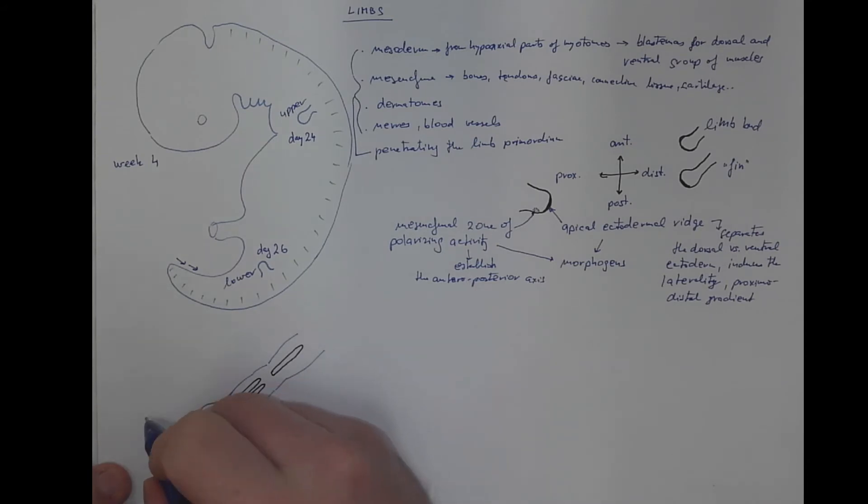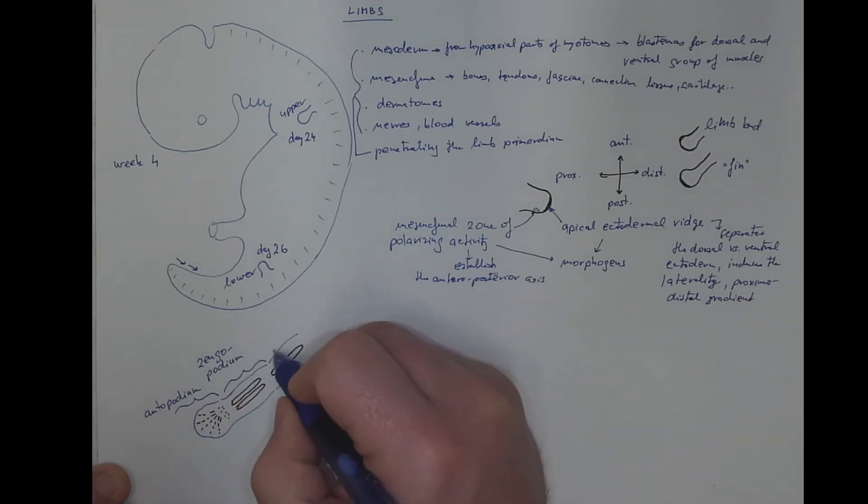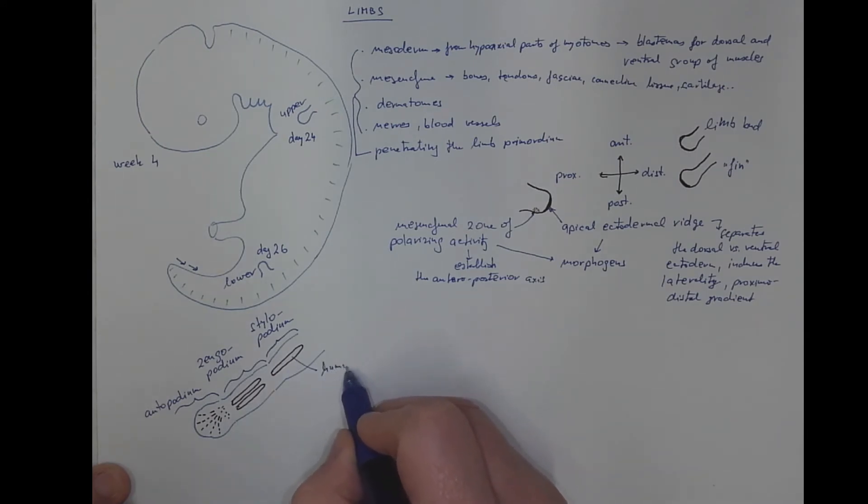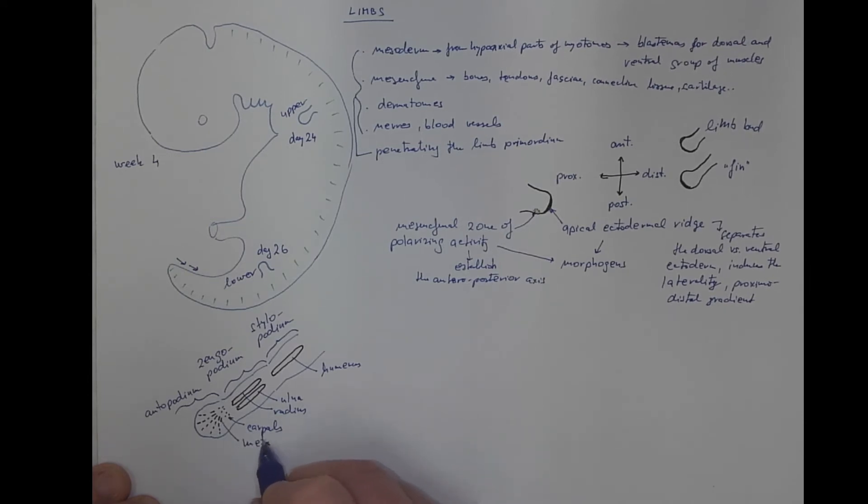We call this part autopodium, zugopodium, stylopodium. In case of the upper limb, this will be humerus. This will be ulna and radius. And in the autopodium there will be carpal bones, metacarpal bones and phalanges.